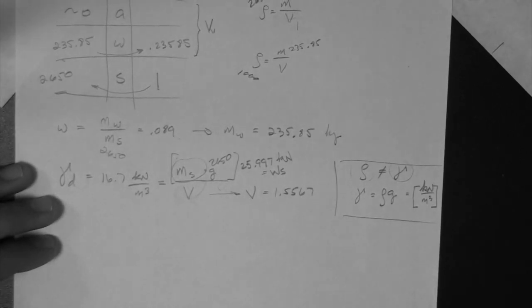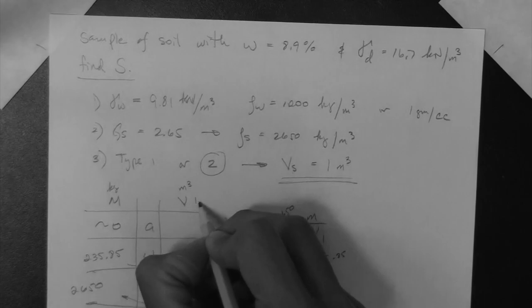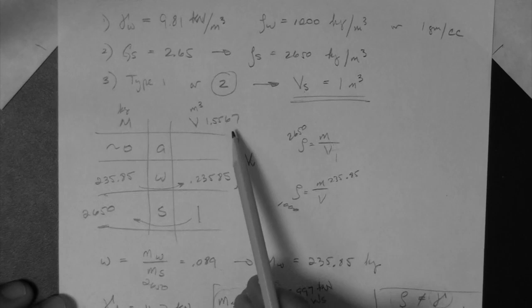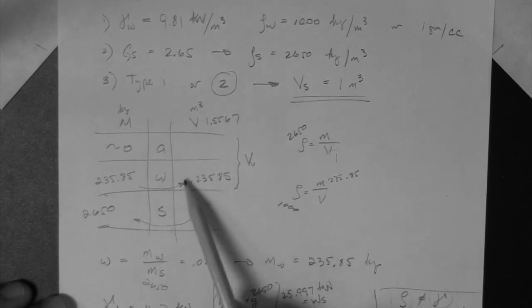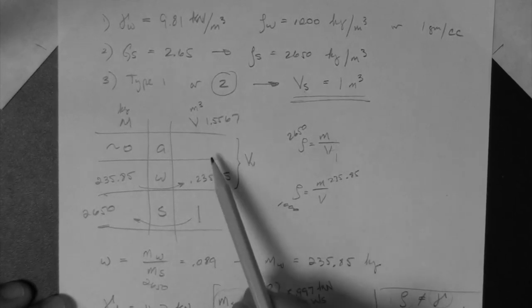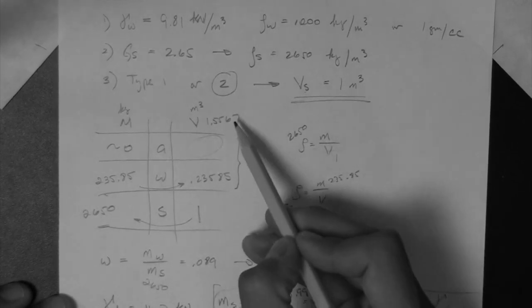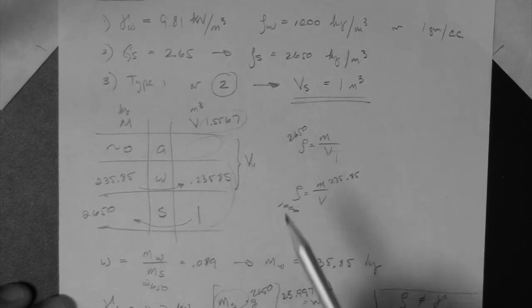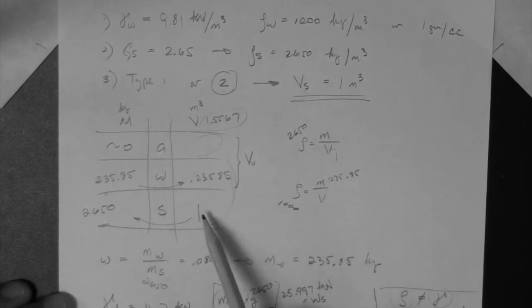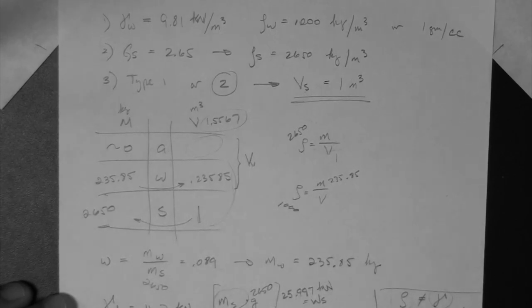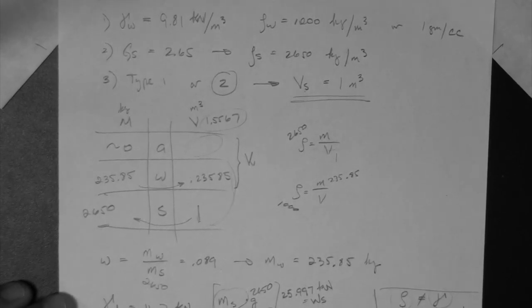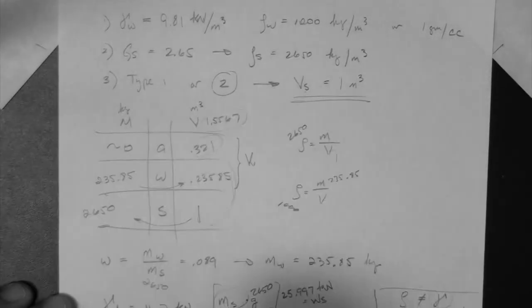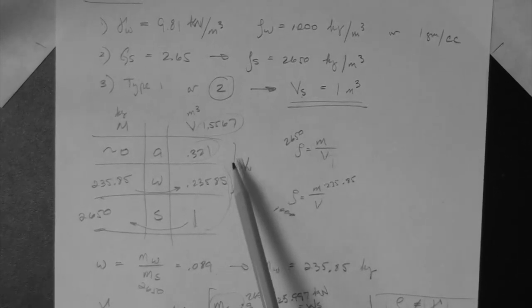That's the volume, 1.5567. So I can now write it here, 1.5567. So notice what happens. We have the total volume, and we have the volume of water and the volume of solids. All we are left to find is that, which is simply this value minus the summation of these two. So 1.5567 minus 1.23585 is 0.321.